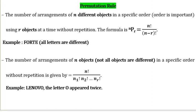The second rule is the Permutation Rule — the number of arrangements of n different objects in a specific order, using r objects at a time without repetition. The formula is nPr = n! / (n − r)!. We also have the P symbol on the calculator. For all different letters, like FORTE, we apply this formula. If not all objects are different, the formula is n! / (n1! × n2! × ...). For example, in LENOVO, the letter O appears twice.